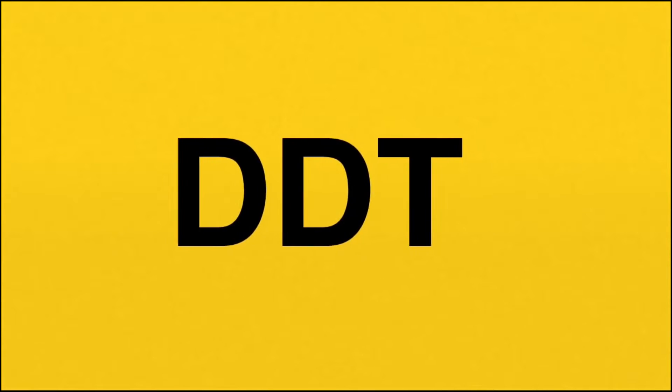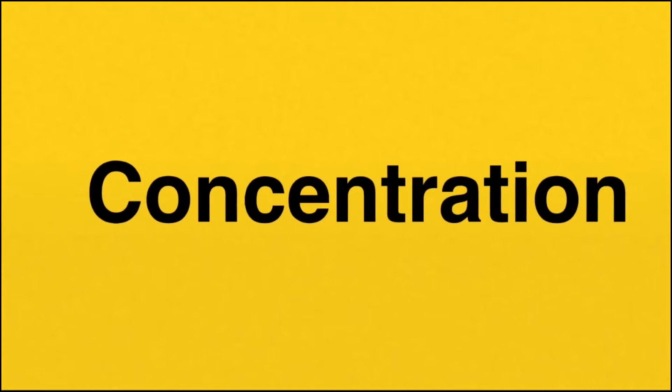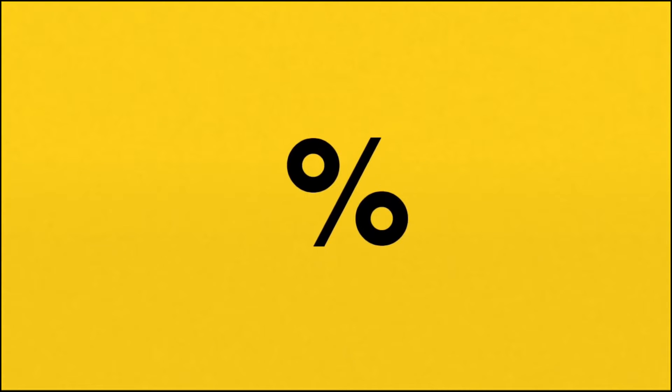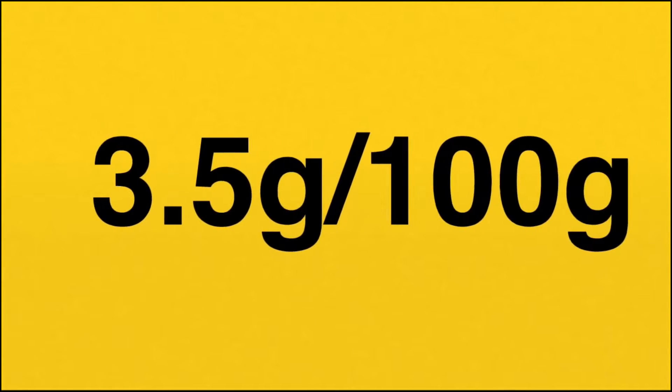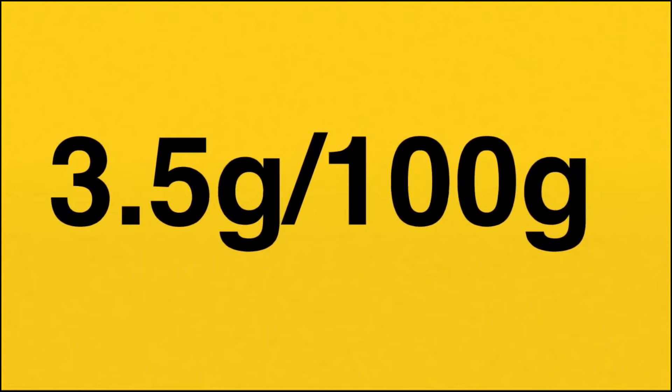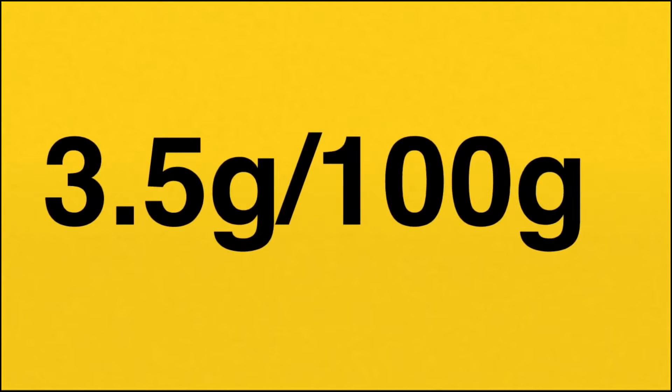We have already learned about an example of this in DDT. So how do we know if we have too much of something that causes pollution? To be able to determine this, we need to be able to calculate the concentration of a substance. Typically, we calculate concentration by determining the percent that that substance makes up. For example, if you're drinking milk that is 3.5% milk fat, then in 100 grams of that milk, you'll have 3.5 grams of milk fat.